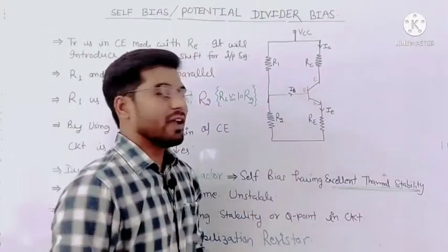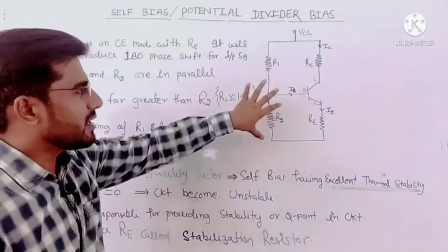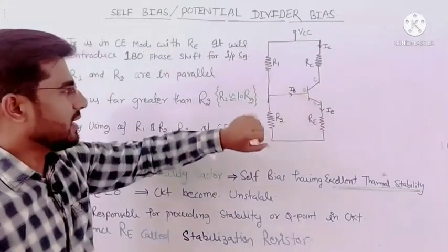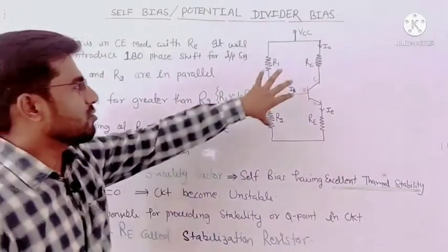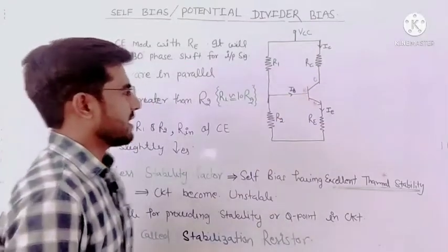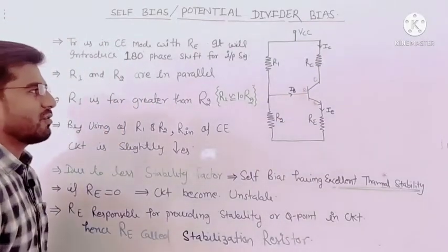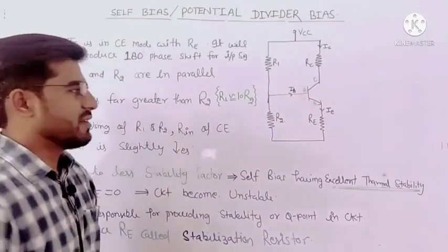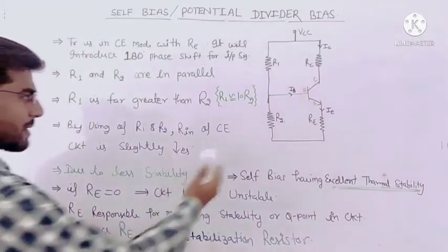With the help of output KVL we can find out the value of VCE. This is a very simple circuit. After solving and breaking it down, it will look quite simple and we can easily find out IC and VCE.